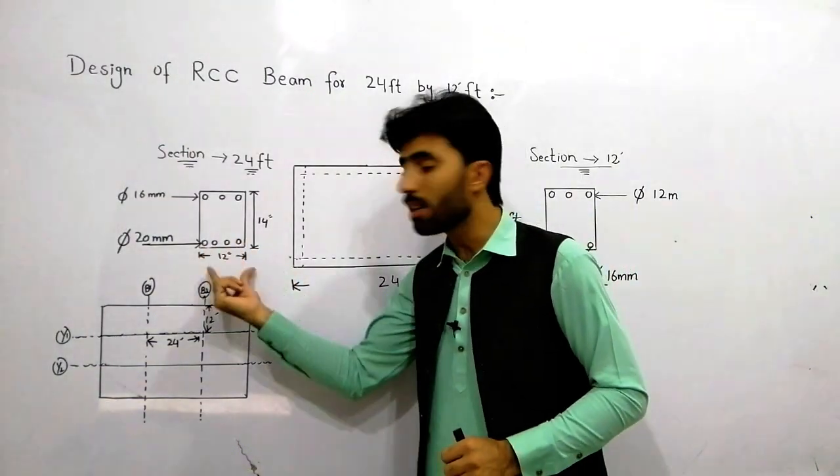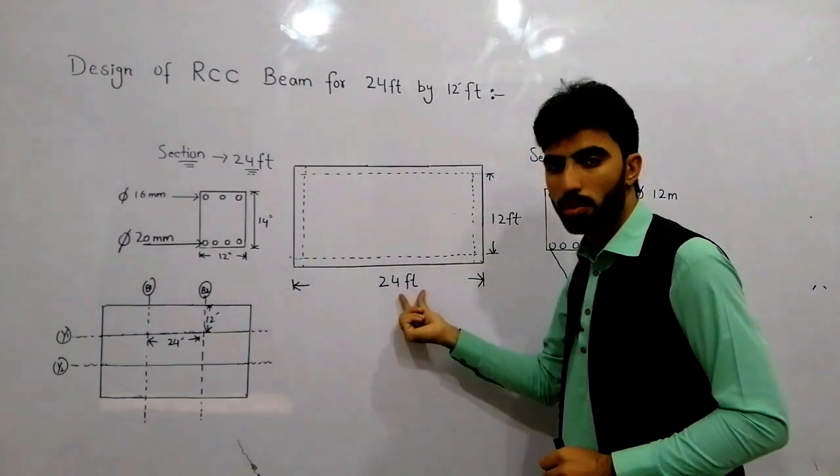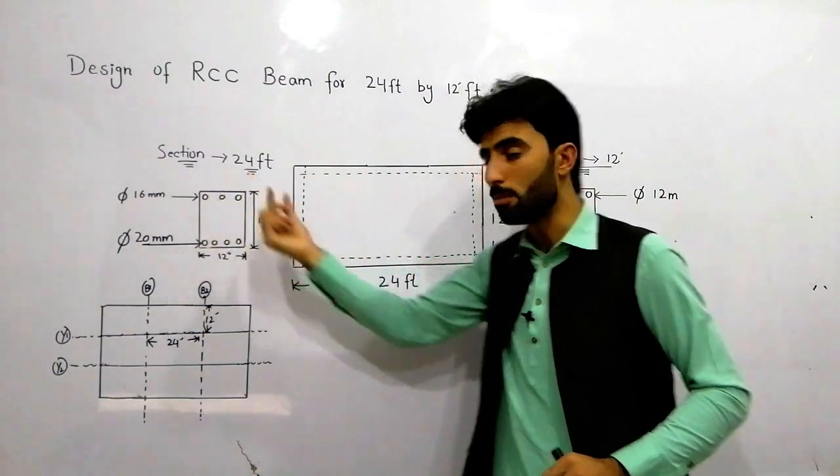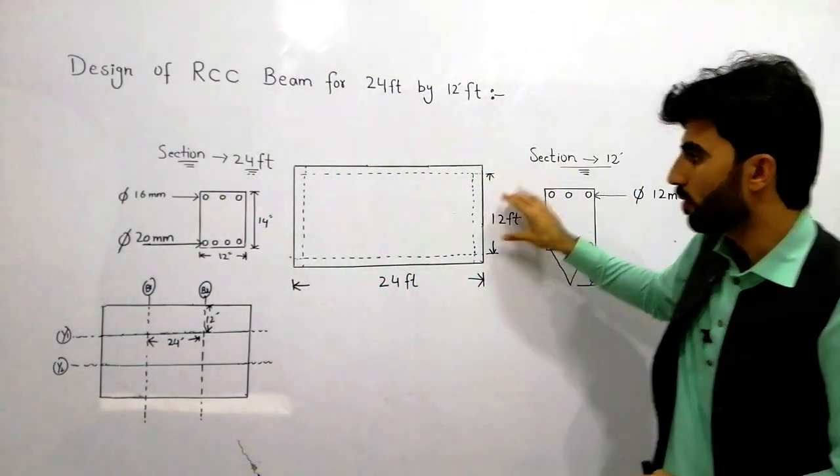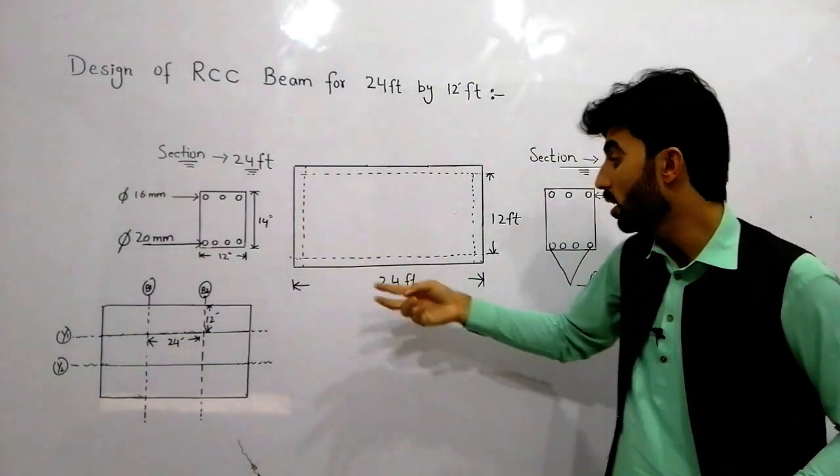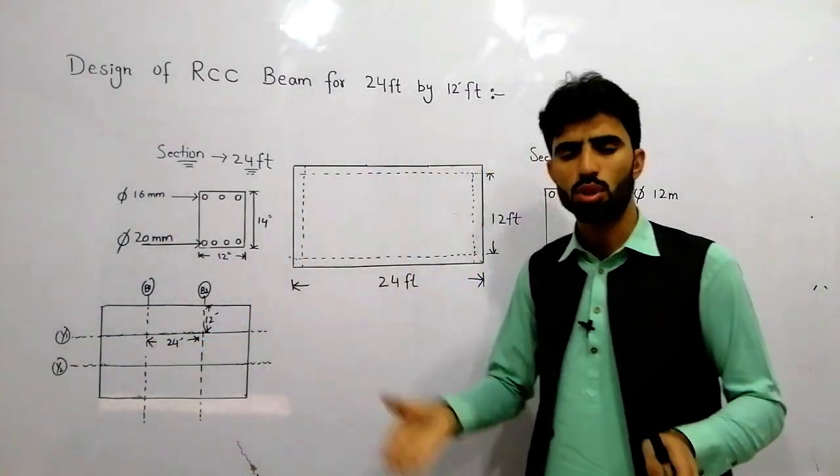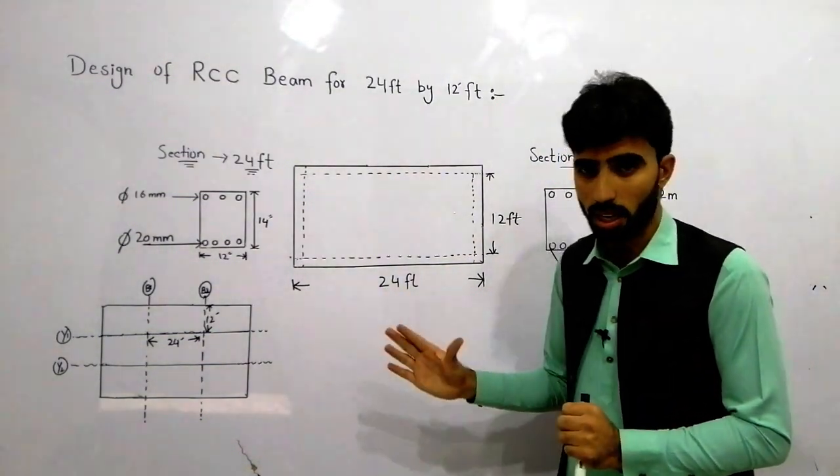Cross section for 24 feet RCC beam and the other side is 12 feet. This is the section for 24 feet and this is the section for 12 feet. I have just taken one diagram to show you how we design it and how much steel we use in this.